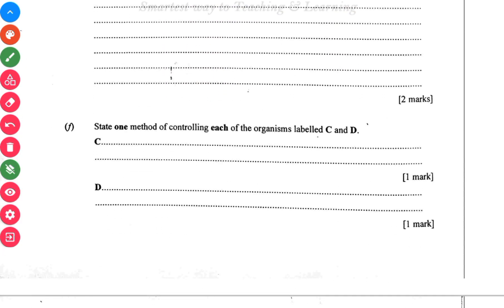State one method of controlling the labeled organisms. For the C is by deworming the organism, and then with the D, which is by the use of insecticide.